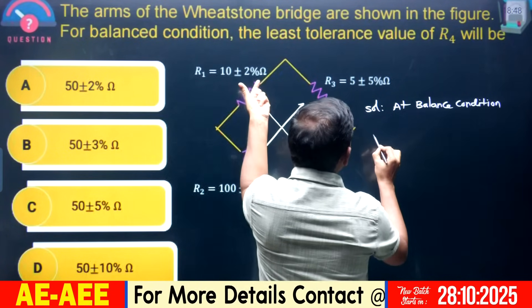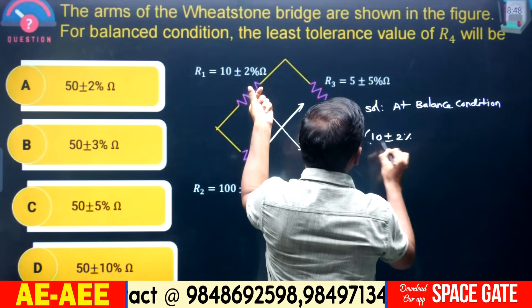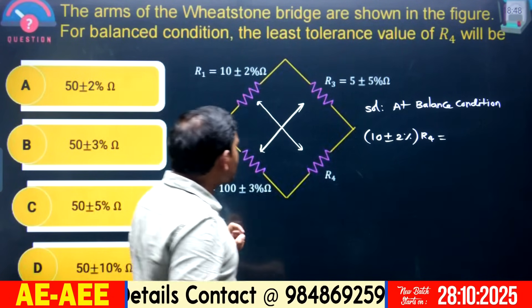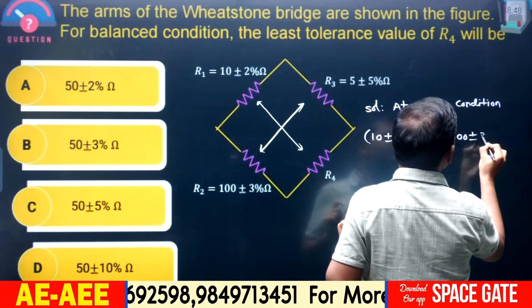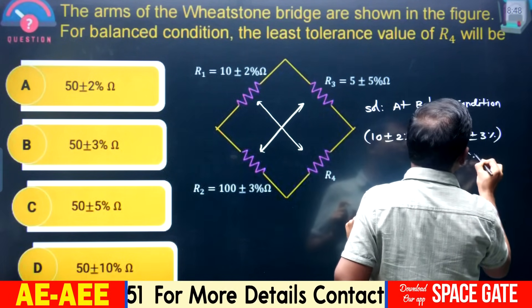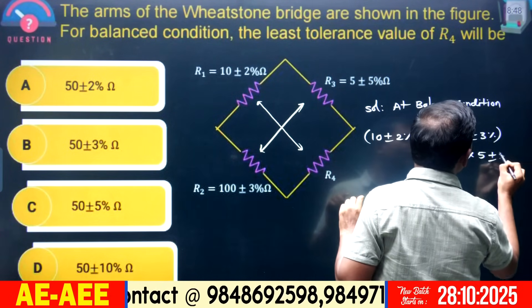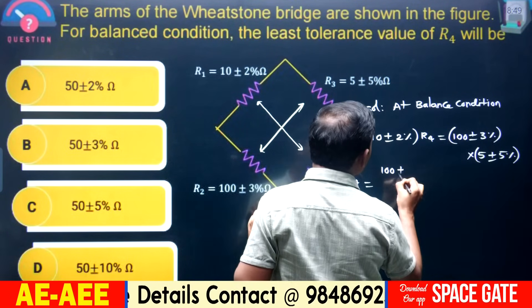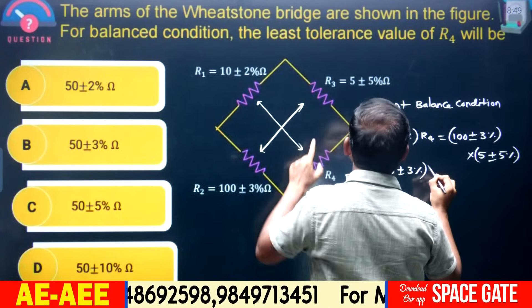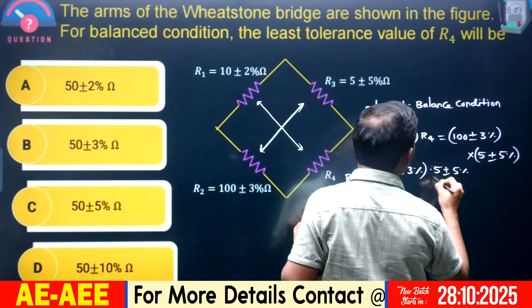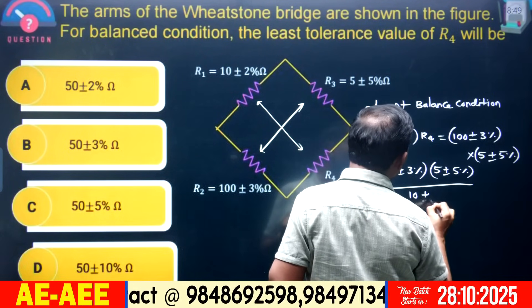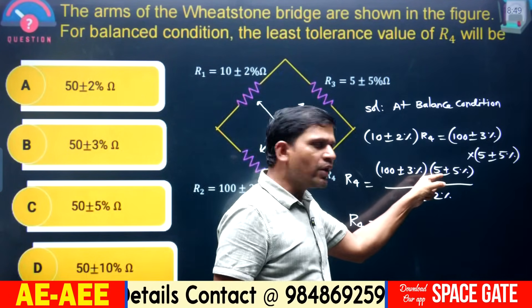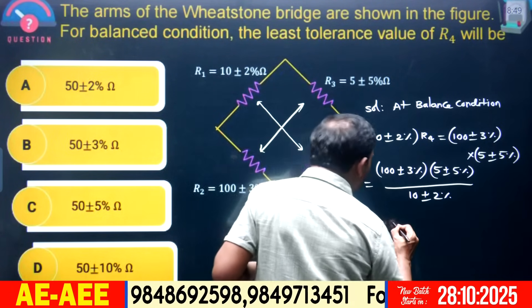Setting up the balanced bridge equation: (10 ± 2%) × R4 = (100 ± 3%) × (5 ± 5%). Therefore R4 = [(100 ± 3%) × (5 ± 5%)] / (10 ± 2%). The nominal value of R4 is (100 × 5) / 10 = 500 / 10 = 50 ohms. Now apply error analysis.